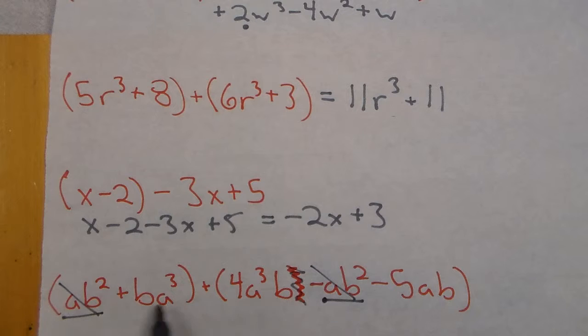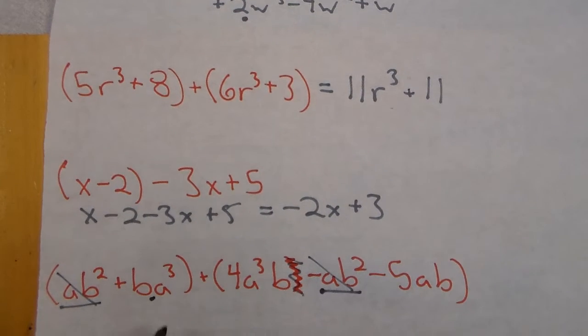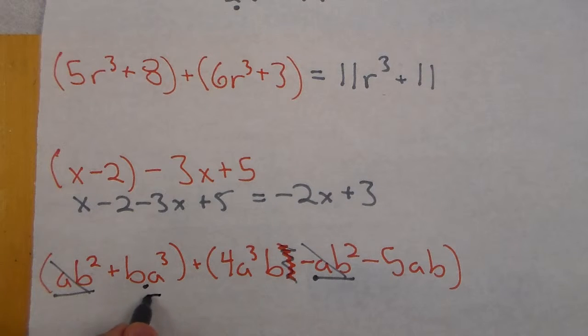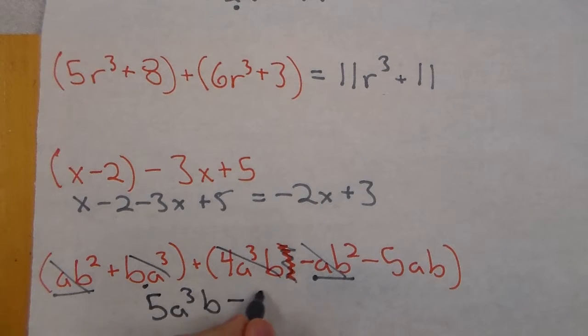Next I have a ba³. I do not have another one. Oh I do actually. It's right here. It's just switched. So ba³ and 4a³b is the same thing. So I have 5a³b. Those are accounted for. Then last the negative 5ab. These are not like terms. Yes they have fives. Yes they have a's. Yes they have b's. But this one is a³ not just ab.